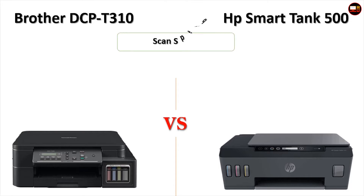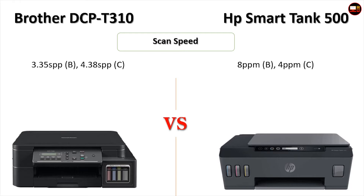Scan Speed — Brother DCP T310: 3.35 SPP Black, 4.38 SPP Color. HP Smart Tank 500: 8 PPM Black, 4 PPM Color.